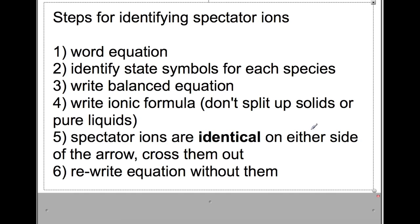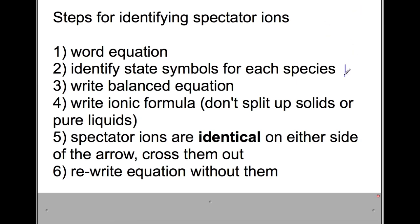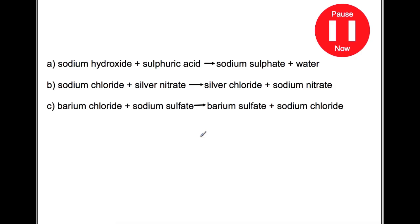To identify and eliminate spectator ions: start with the word equation, identify state symbols for each species using page 8 of your data book, write a balanced equation, then write the ionic formula but don't split up solids or pure liquids. Spectator ions are identical on either side of the arrow — same charge and same state symbol. Cross those out, then rewrite your equation without them. Here are three examples for you to try — pause the video now and try them using the previous slide to help you.